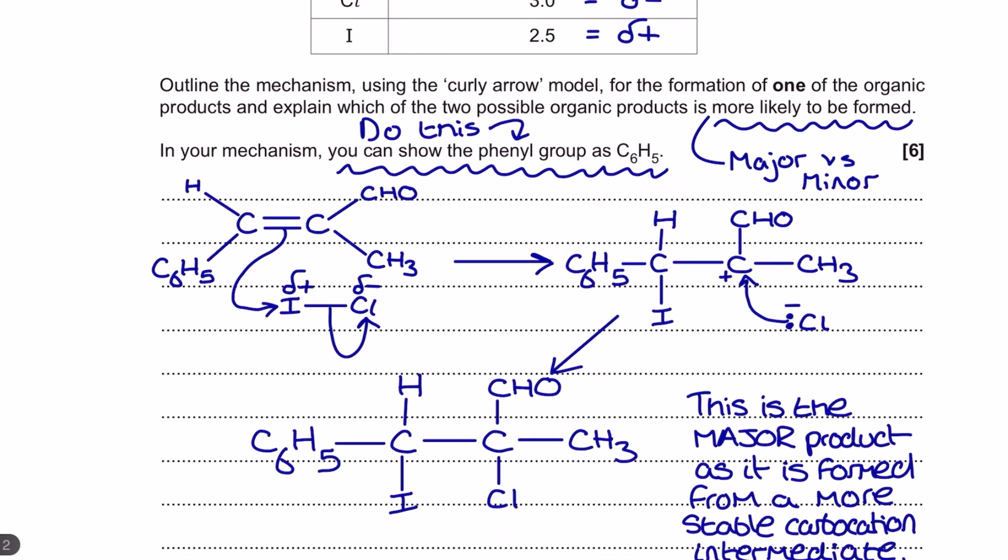Now we've also been told that there are two different possible organic products and one of them is more likely than the other, and this is your major versus minor. This is your Markovnikov rule that comes up inside module 4 for the alkene topic. This is what I mean about this being really weighted towards that module 4 material.